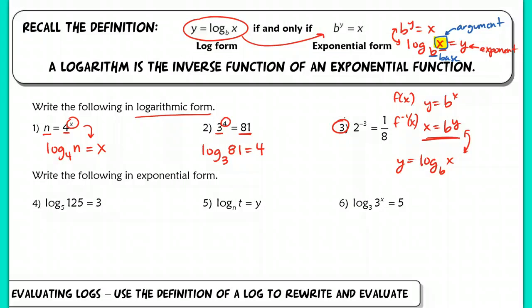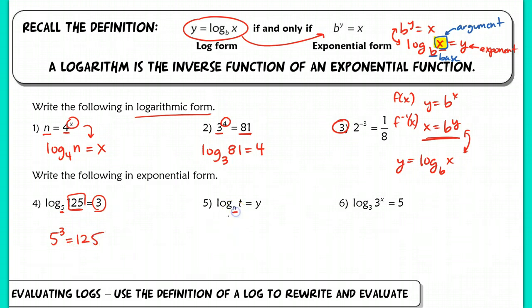In number 4, we convert from log form into exponential form. The base is 5, so that becomes the base of the exponential equation — 3 is the exponent, so this is 5 to the 3rd equals the argument, 125. For number 5, the base is n, so n to the y power equals t. You can try number 6 on your own.